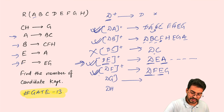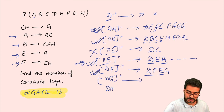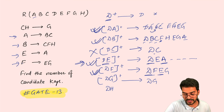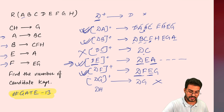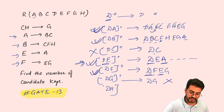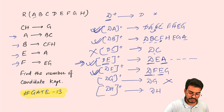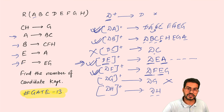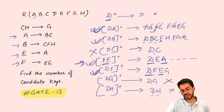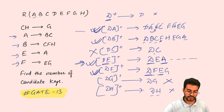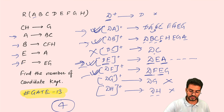So we get four candidate keys: DA, DB, DE, and DF. The answer is four candidate keys.